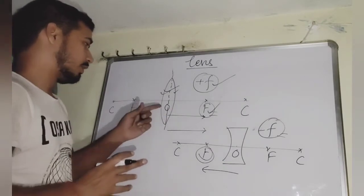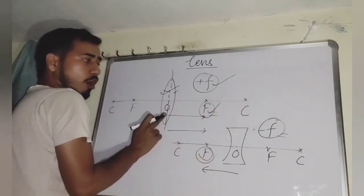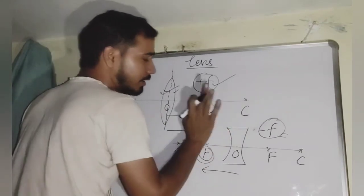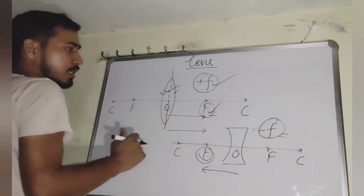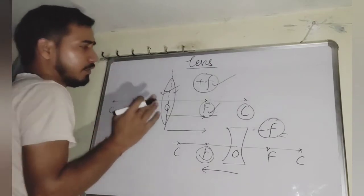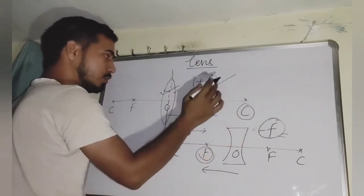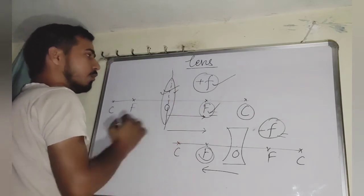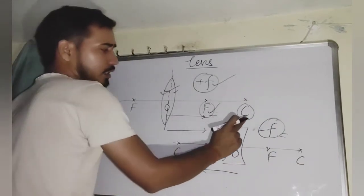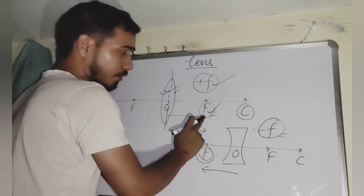If we define the principal axis, it is a straight line joining the optical center and the center of curvature of the lens. The center of curvature for each curved surface is defined as the center of the solid sphere from which that curved surface is taken — the same definition as in the case of a mirror.